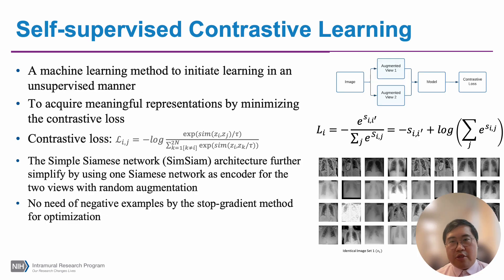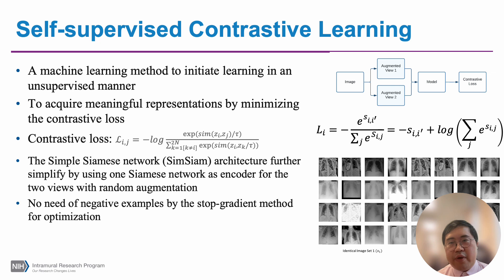Self-supervised contrastive learning is a machine learning method to initiate learning in an unsupervised manner. In order to acquire meaningful feature representation by minimizing the contrastive loss, as shown in the middle left of this slide, the original contrastive function is similar to the softmax function, but it computes the cosine similarity score. Very similar examples will have a score close to 1, and extremely dissimilar examples will have a score close to 0. After taking the logarithm, it is easy to apply a loss function where the success of learning image similarity will let the objective loss approach 0.